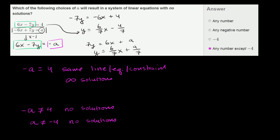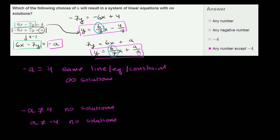So in slope-intercept form, both equations have the exact same slope. If a equals negative 4, the y-intercepts match and they're the same equation — infinite solutions. On the other hand, if a is anything other than negative 4, you get a different y-intercept and the two lines are just parallel — no solutions.